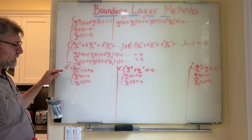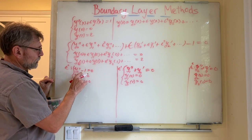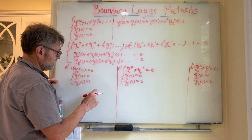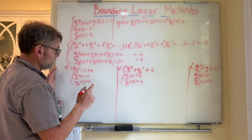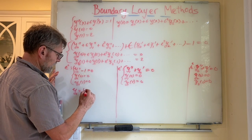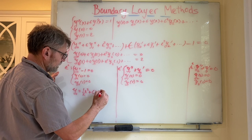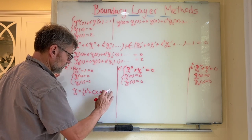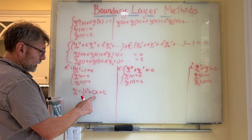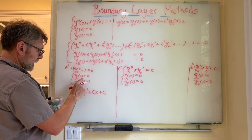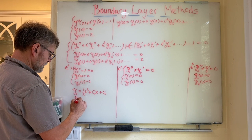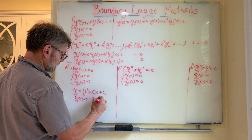Let's solve the equation. If y naught double prime equals one, then y naught prime equals x plus a constant. Integrating again, the solution is y naught equals one half x squared plus c1 times x plus c2. Applying the boundary condition at x equals zero: y naught of zero equals zero implies that c2 equals zero.